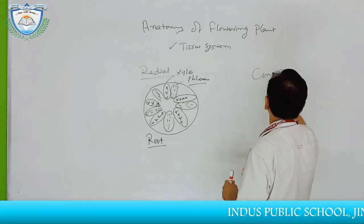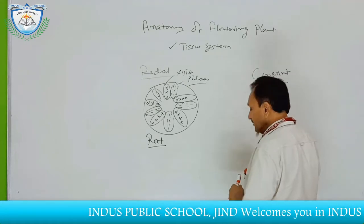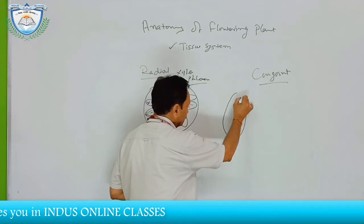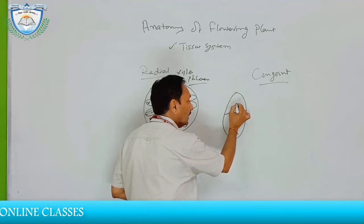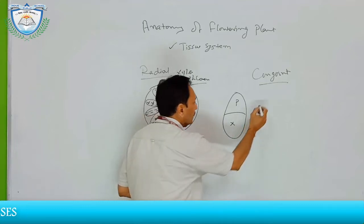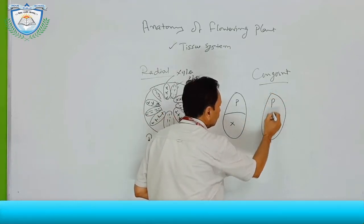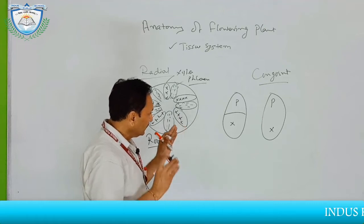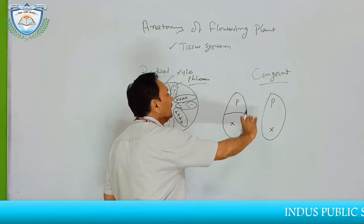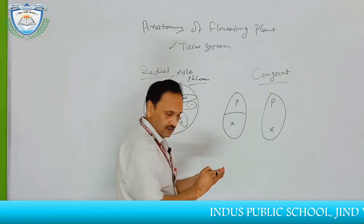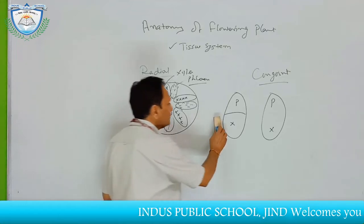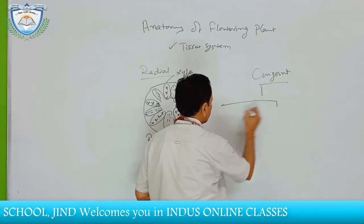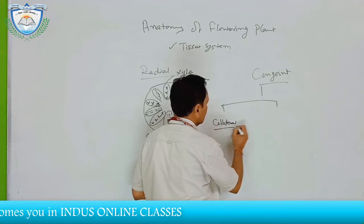The second is the conjoined vascular bundle. It means the vascular bundle is present with phloem and xylem together. We can classify this conjoined vascular bundle in many ways. Firstly, on the basis of the arrangement of xylem and phloem, it is of two types — collateral and bi-collateral.